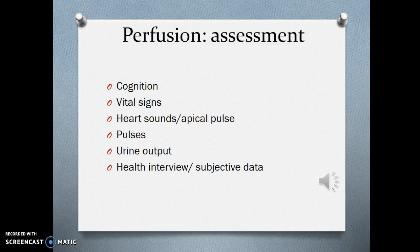When looking at physical assessment, a lot of what you're doing is going to relate back to perfusion. When you walk in the room the first thing you think about is mental status and cognition, as alterations in cognition can sometimes be related to an alteration in perfusion. Vital signs tell you a lot about your body's ability to perfuse the major organs and the extremities. Heart sounds and apical pulse also tell you a lot about perfusion status — you should always do an apical pulse for 60 seconds. Peripheral pulses should be graded from plus one to plus four.